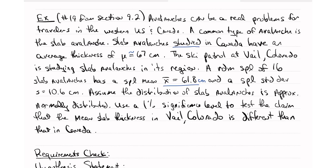We're going to assume that the distribution of the slab avalanches is approximately normal. Use a 1% significance level to test the claim that the mean slab thickness in Vail, Colorado is different than that in Canada. So right here we've said the claim. And so that is going to be the claim that the mean slab thickness in Vail, Colorado is different than that in Canada, which is 67 inches.